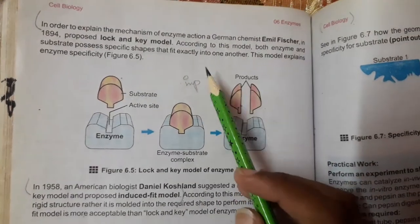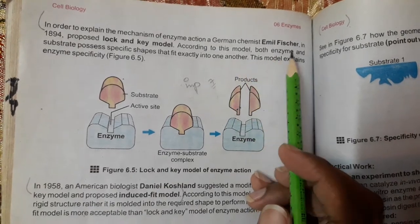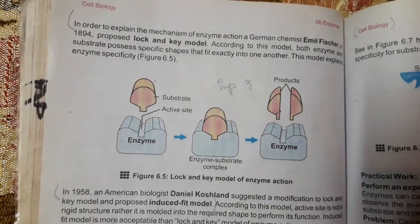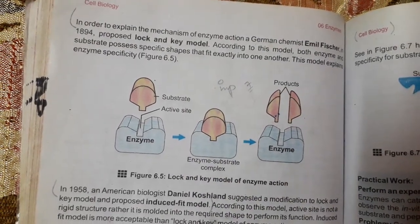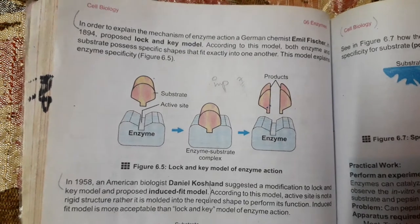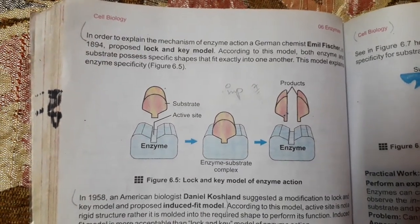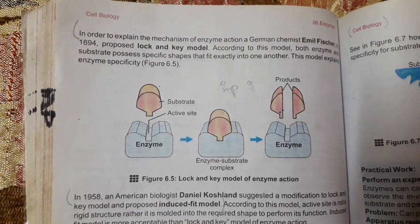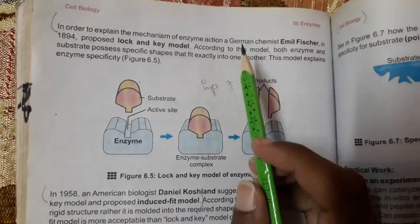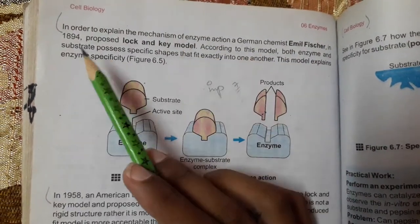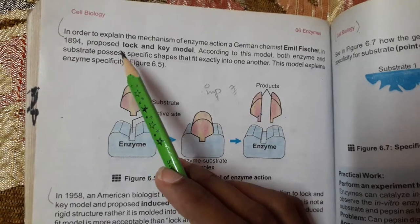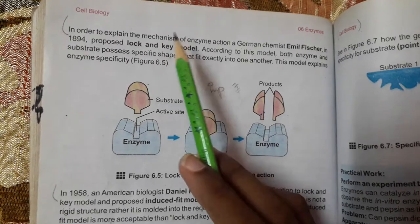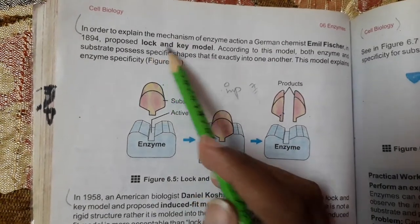In order to explain the mechanism of enzyme action, a German chemist Emil Fischer in 1894 proposed the lock and key model. According to this model, both enzyme and substrate possess specific shapes that fit exactly into one another — just like a lock and key, where every lock has a specific key. This model explains the specificity of enzymes, as each substrate has its specific enzyme.